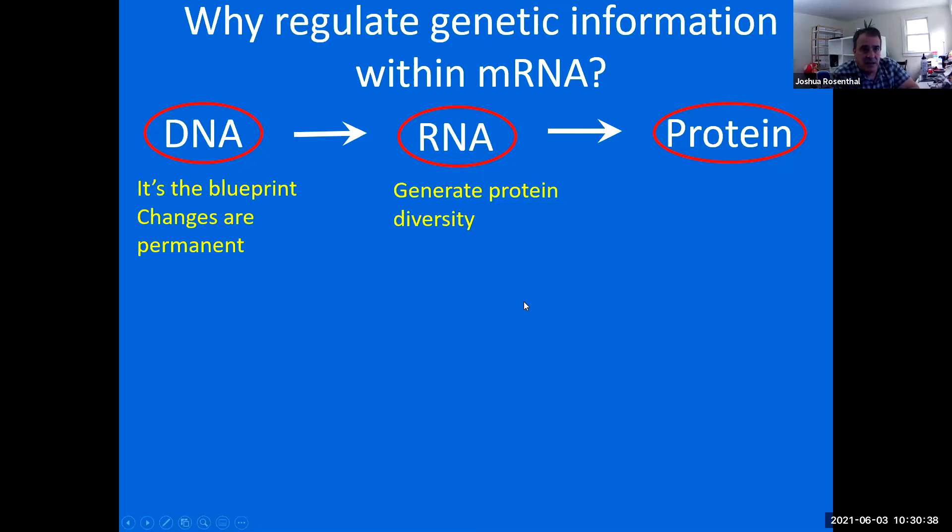Whereas RNA is a transient molecule. So if you make changes in RNA, not only can you create diversity from the genetic blueprint, but you can also erase those changes and remake them according to conditions. This is all in theory. So RNA really is a much more flexible molecule than DNA in terms of genetic output.